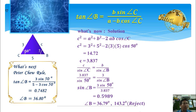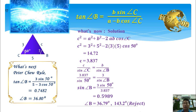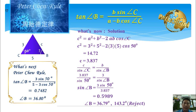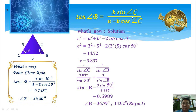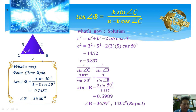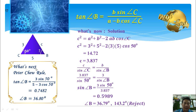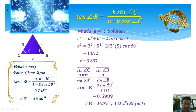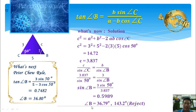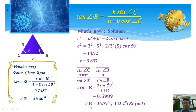Today, I want to share my new rule with my friends. We can use this to directly find the non-included angle — I call it the Peter Chiu Rule. As shown, tangent B equals b times sine C, divided by a minus b times cosine C. As we have seen, it is easier to use Peter Chiu Rule — just three steps — compared to using cosine rule plus sine rule to get the final answer.